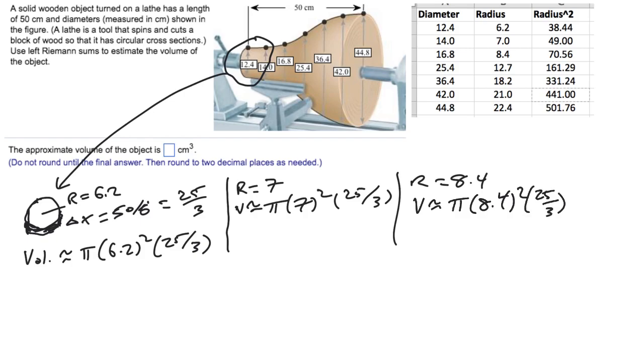And I'm going to do this for each of the six slices. So that's slice number one, slice number two, slice number three, and so on. So there are six slices altogether. So my approximation total volume is approximately just the sum of these things. Notice that every one of them has a pi and a 25 thirds in it. And so I'm just going to factor that out.